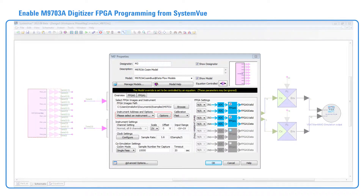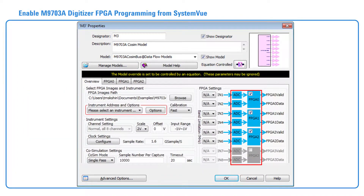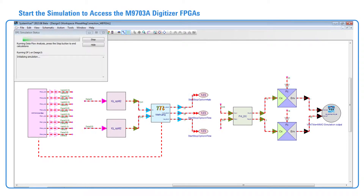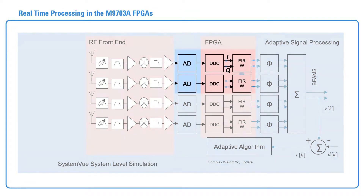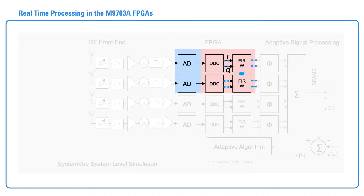The FPGA settings are enabled from SystemVue to program and access the FPGA hardware in the digitizer. The simulation is started, which will download and reconfigure the FIR coefficients in the digitizer FPGA hardware. The digital downconversion signal processing algorithms and reconfigurable FIRs that are implemented on the digitizer FPGAs are illustrated here. The coefficient values of the reconfigurable FIRs are being dynamically adjusted while the simulation is running. This will correct the cross-channel amplitude and phase response as a function of frequency for the measurement channels on the digitizer.